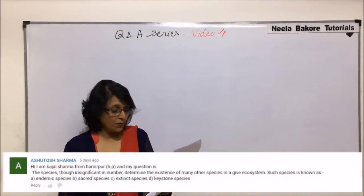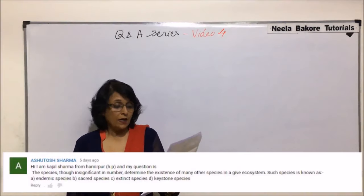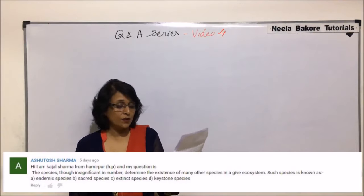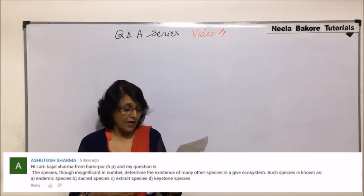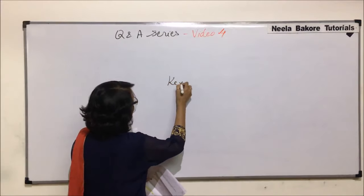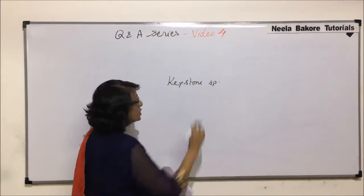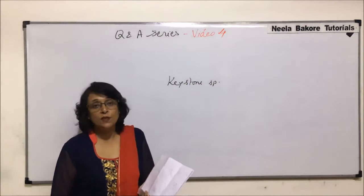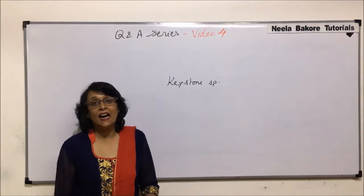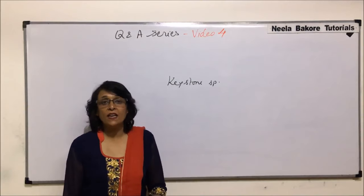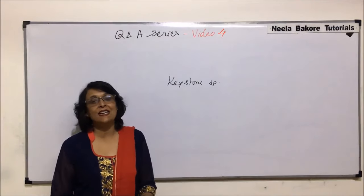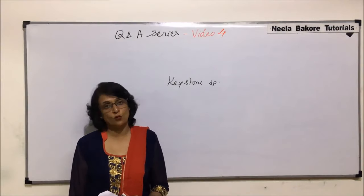Kajal Sharma from Hamirpur asked: which species, though insignificant in number, determines the existence of many other species in an ecosystem? These are called keystone species. Keystone species — whether animal or plant — are unique in determining how an ecosystem functions, despite their small numbers.